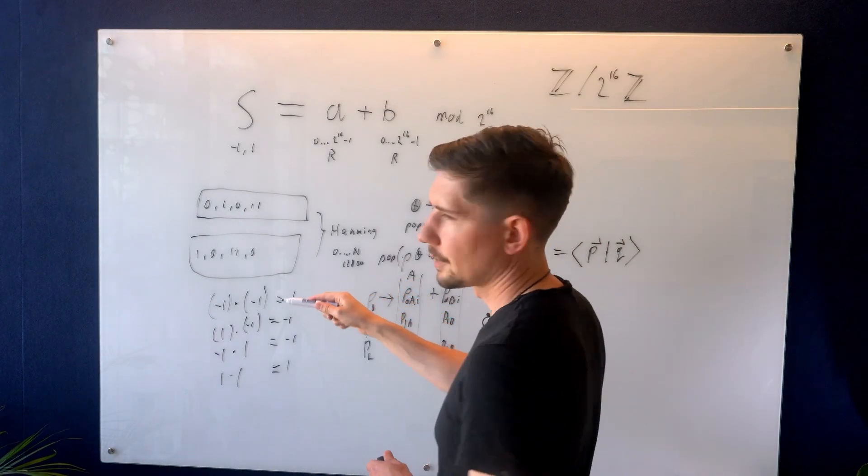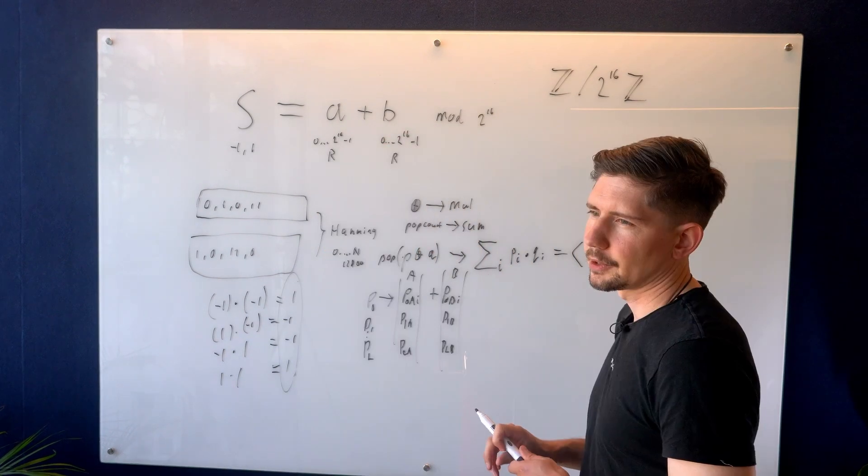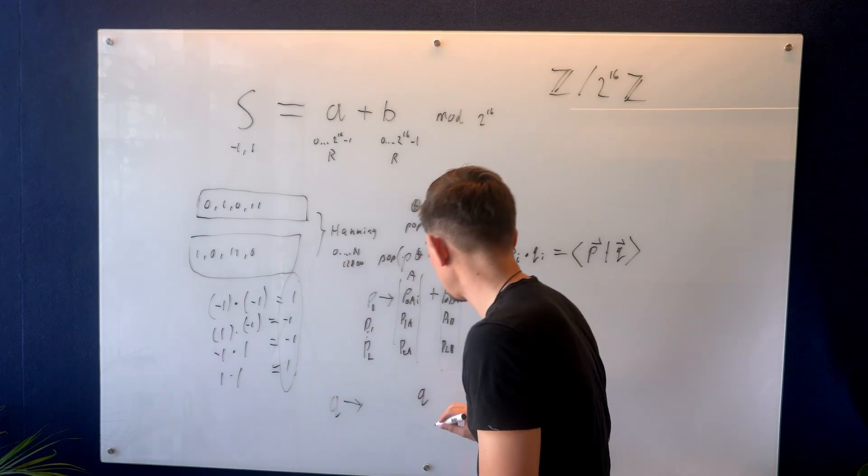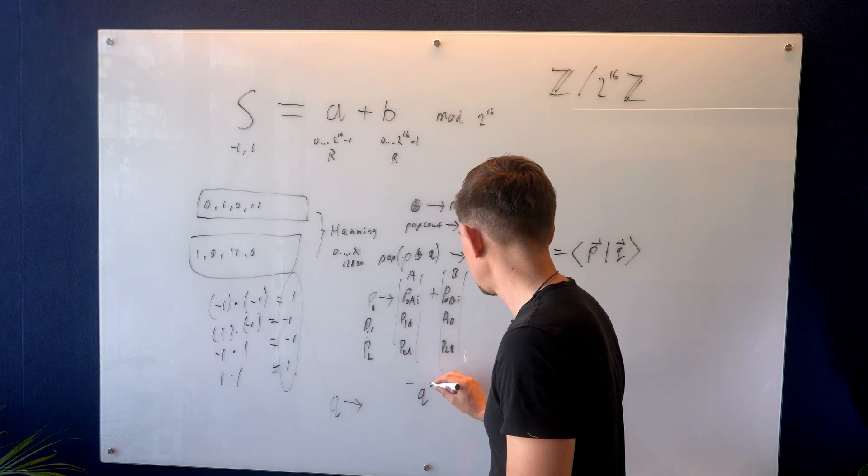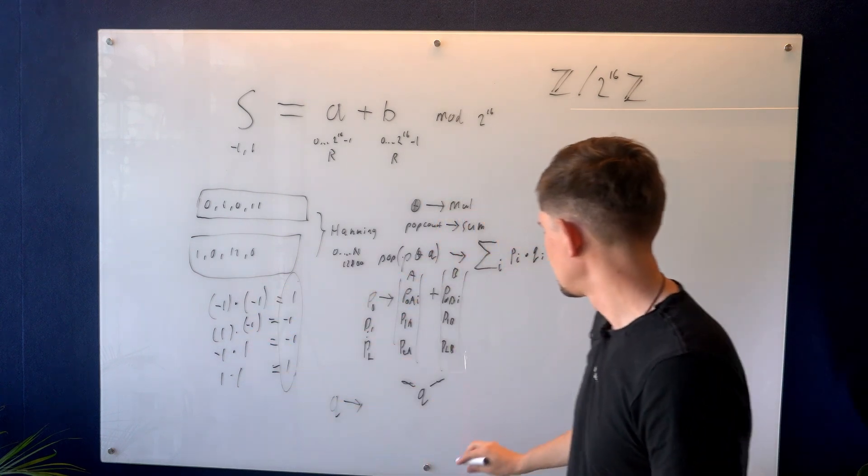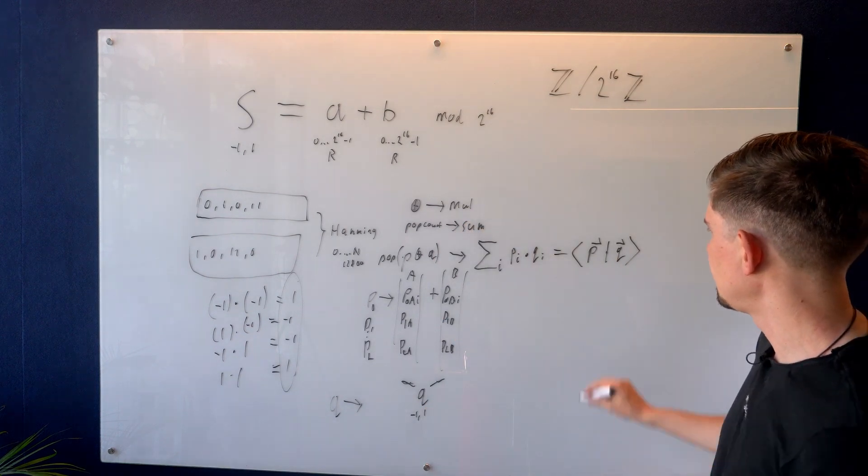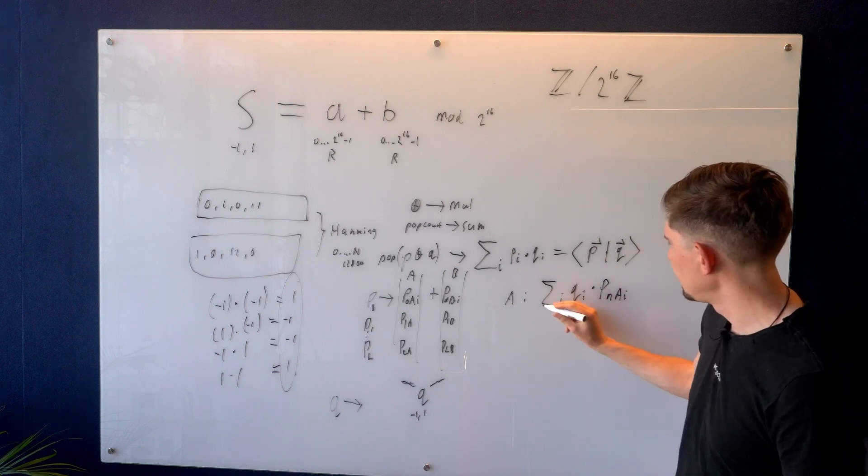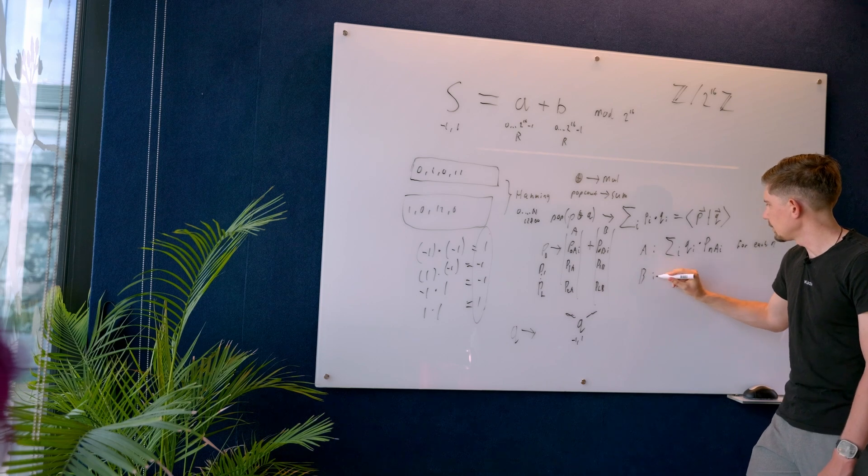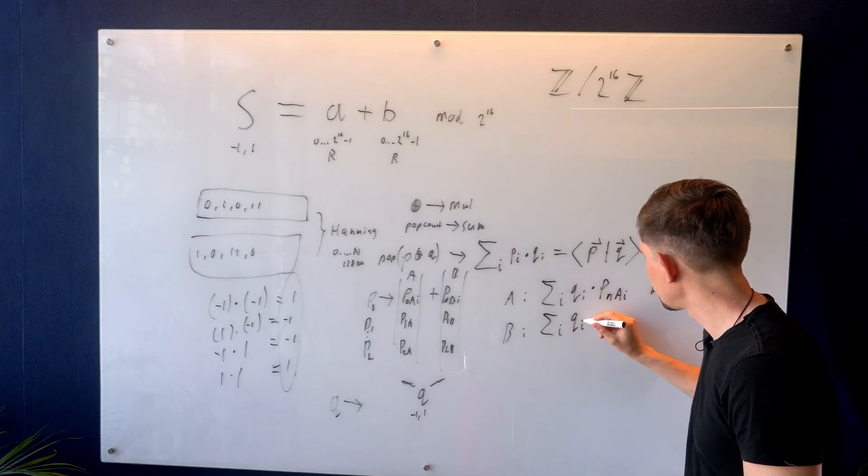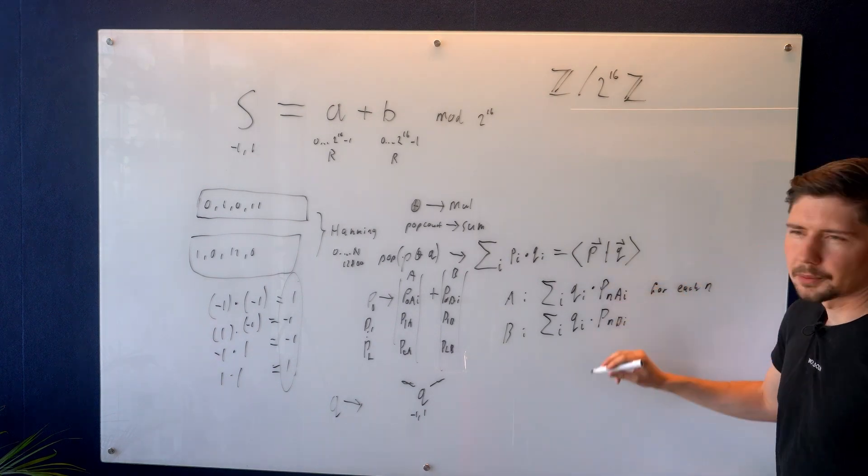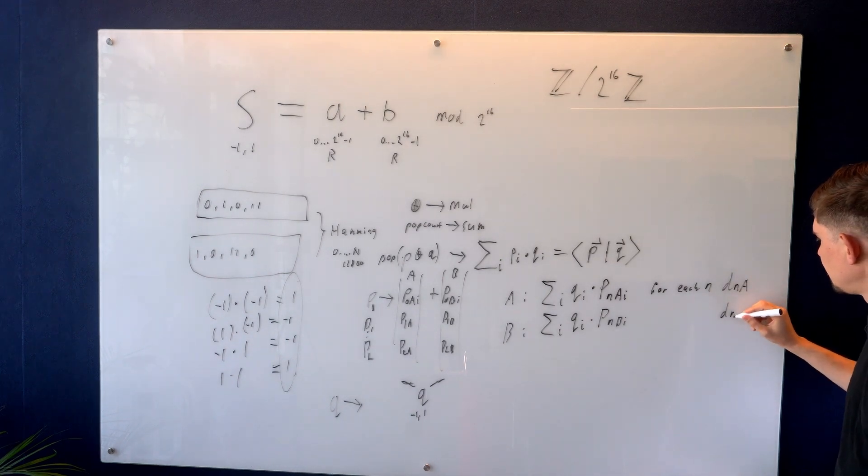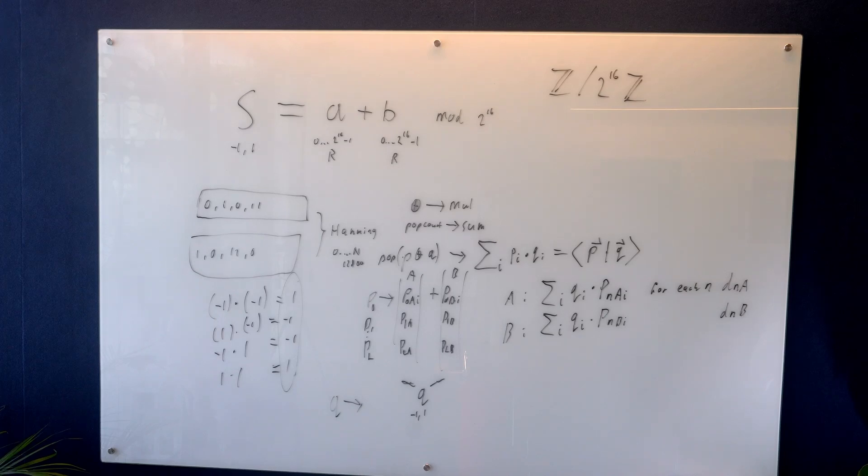So party A will have all the A vectors. Party B will have all the B vectors. But in order to get the full distance, you still need to put them together, no? Yes, so when the new iris code gets added, we turn this also into minus one, one encoded vector. And let's call this Q for query. This is getting turned into just one vector that is shared with both. So it's not secret shared in this sense. This is just a direct encoding. But what this allows you to do is party A can now compute sum over Q_i times P_n_A_i for each n. So for each pre-existing iris code, party B does the same thing. It computes a sum over products, but now over all the B shares.